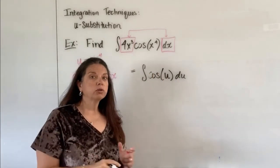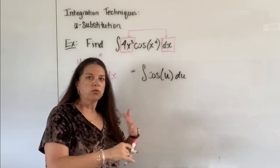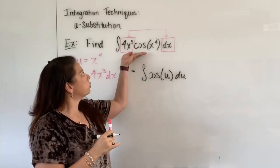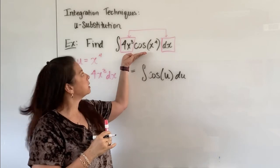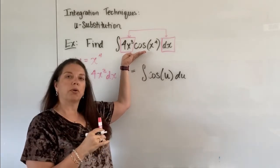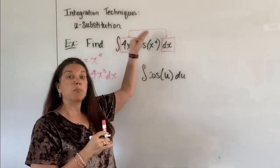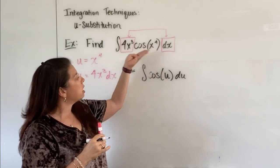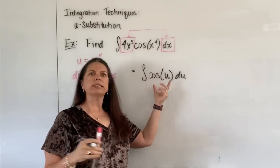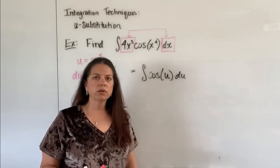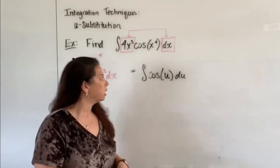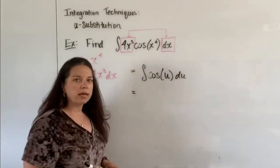The whole point of u-substitution is to remove the heavy lift of trying to integrate something that started as a product and more specifically a composition of functions, so that now we look here and say, oh, we can handle the integral of cosine u. That's no problem. So let's figure out what that is.